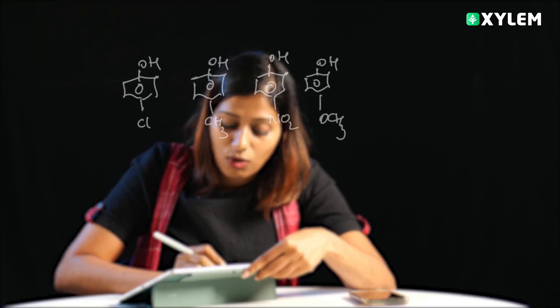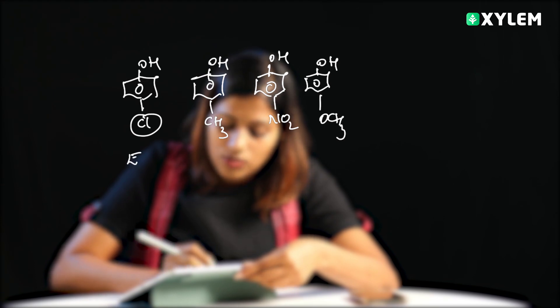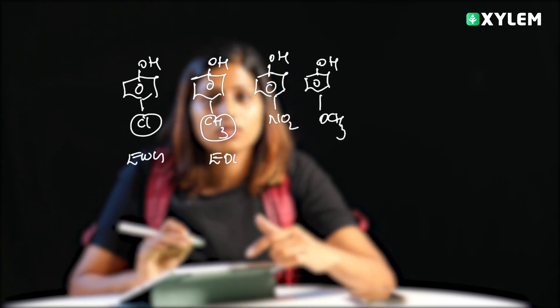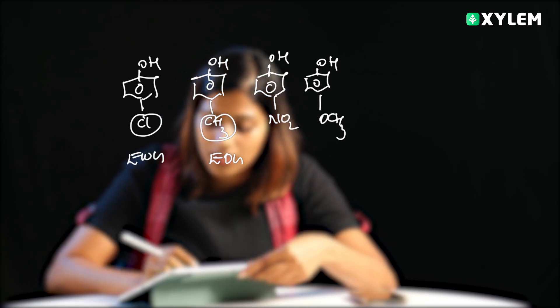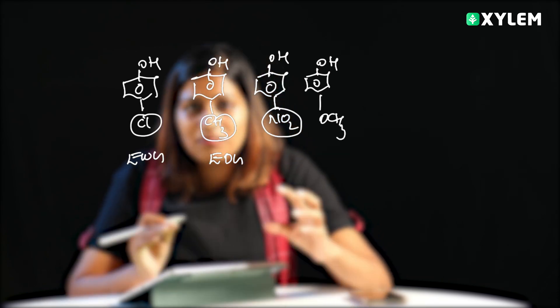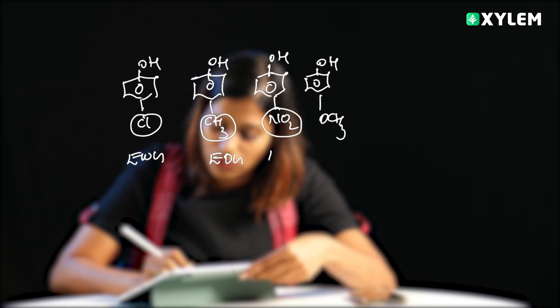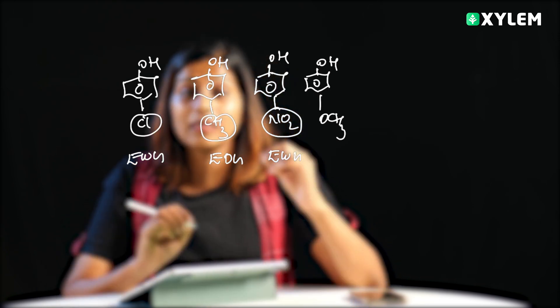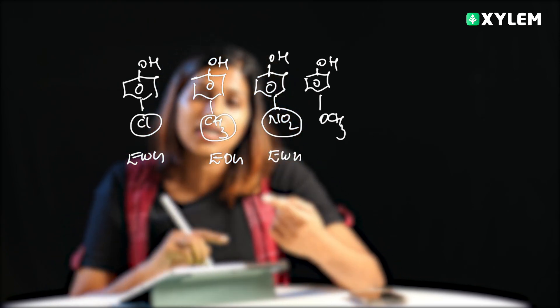In the first case we have chlorine, second we have CH3, third we have NO2, fourth we have OCH3. CH3 is an electron donating group because of the hyperconjugation effect. NO2 is both resonance and induction electron withdrawing group. OCH3 is resonance electron donating.